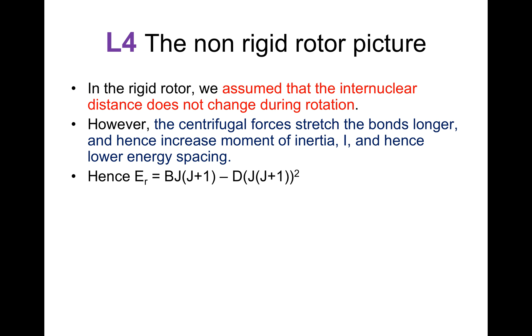Hence, E_R is equal to B*J*(J+1) minus D*(J*(J+1))^2. D is the centrifugal distortion constant.